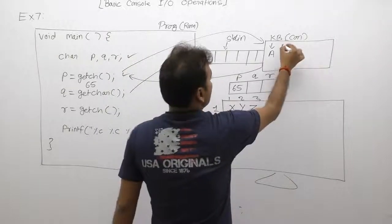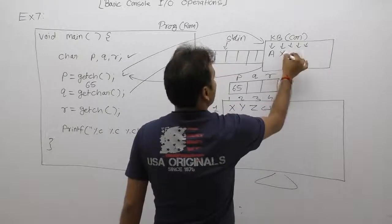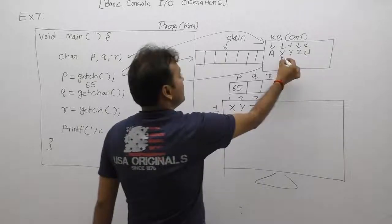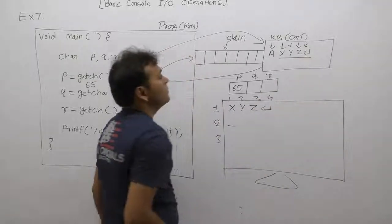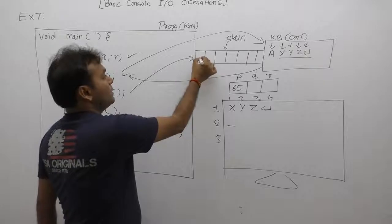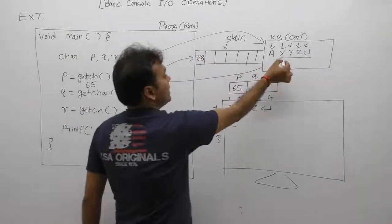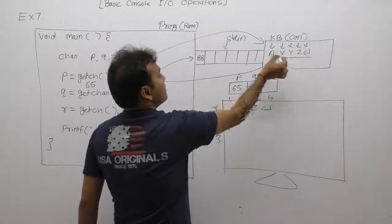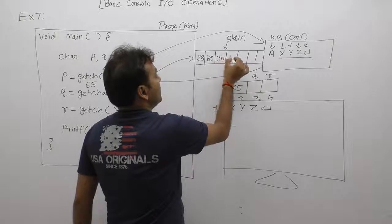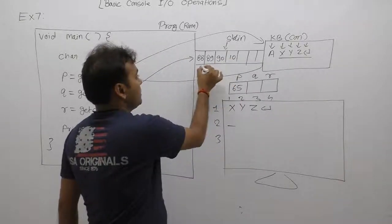From the keyboard, when you press X, Y, Z keys and then Enter, these four characters are stored. The ASCII value of X is 88, the ASCII value of Y is 89, the ASCII value of Z is 90, and then finally Enter (ASCII 10). Initially the buffer pointer points to the first character written.